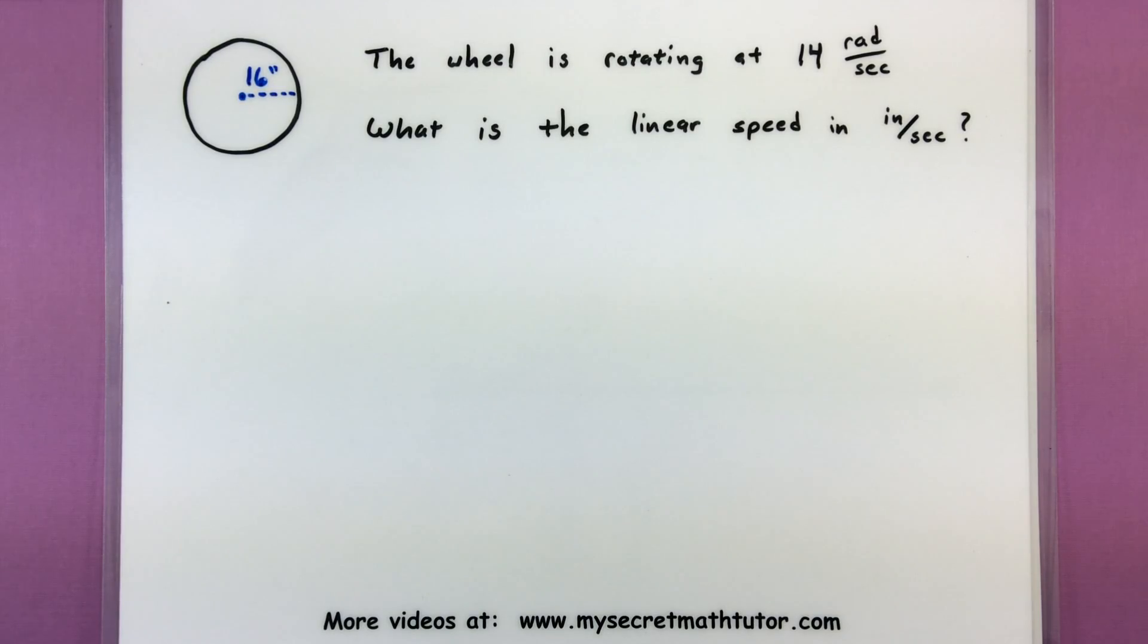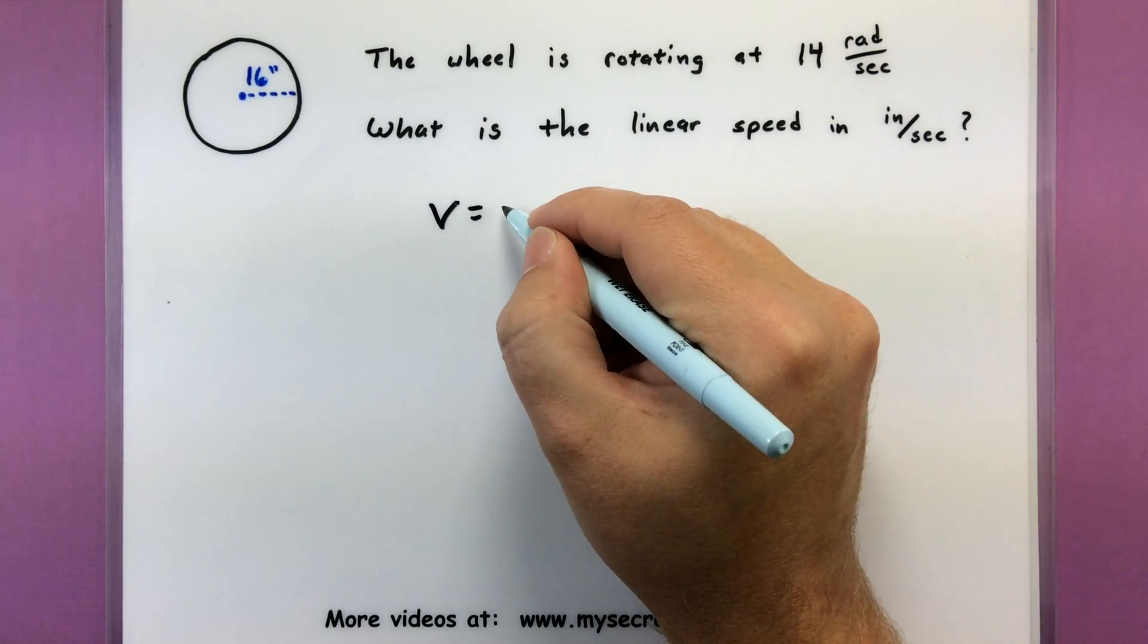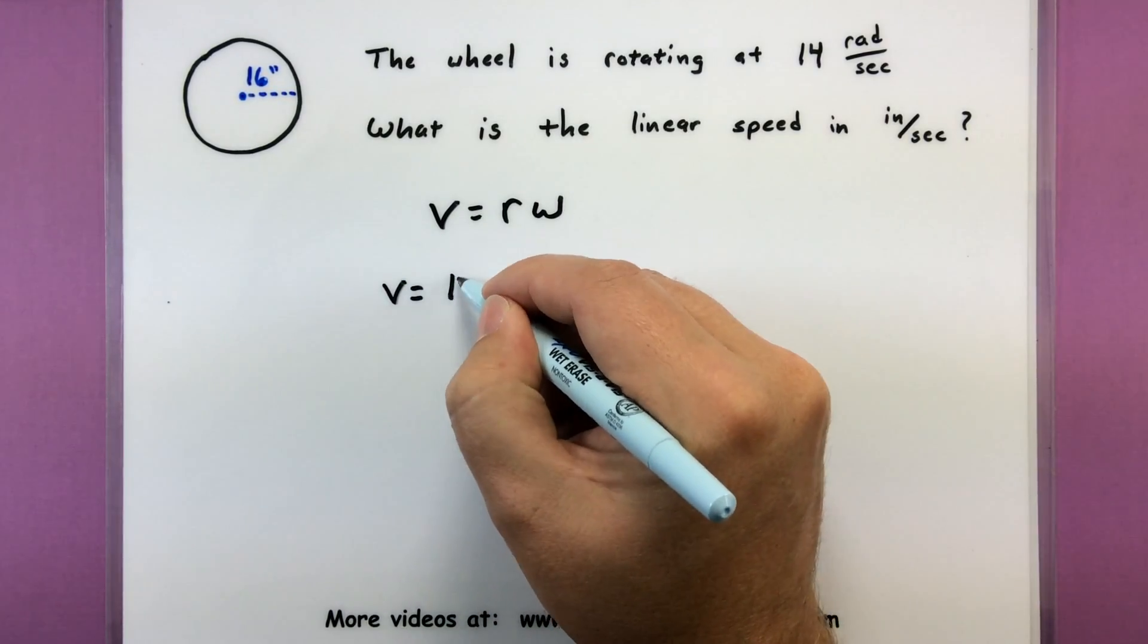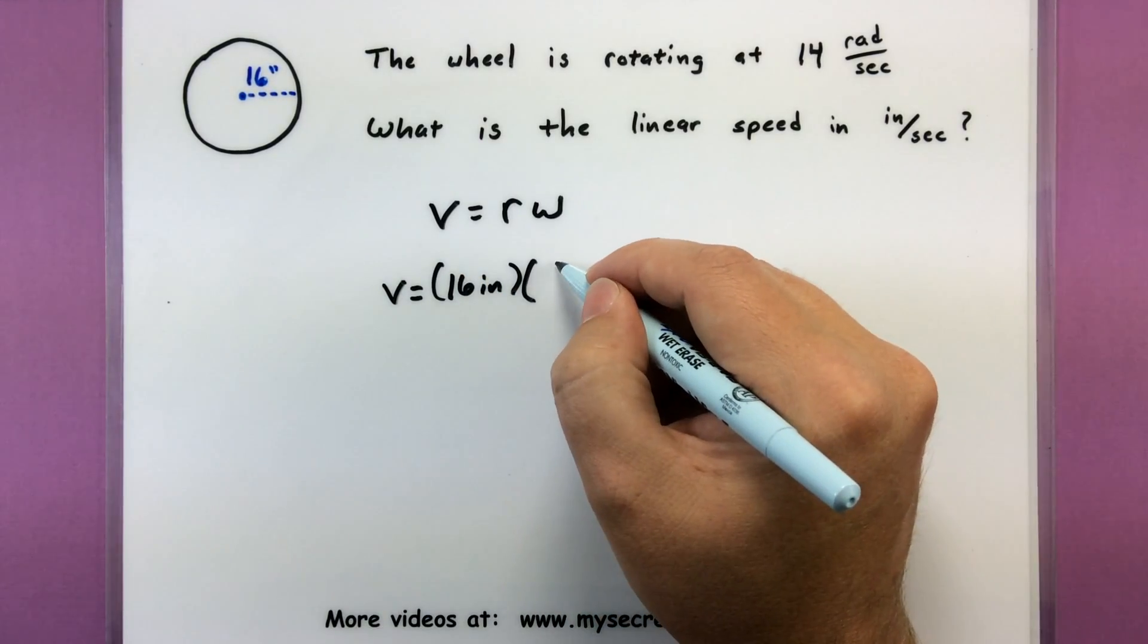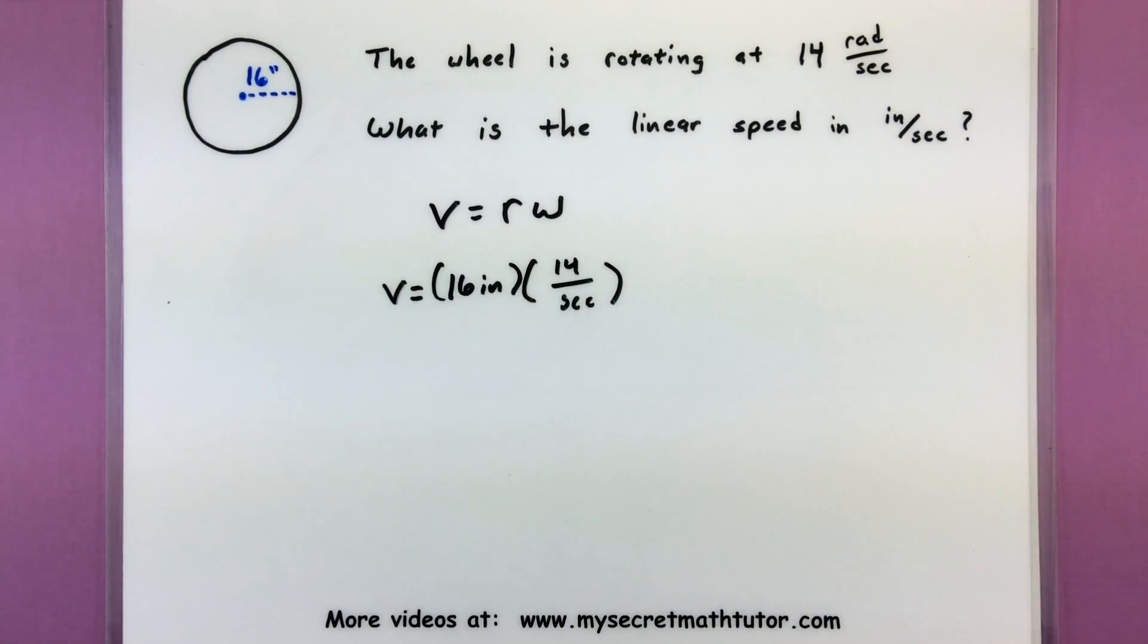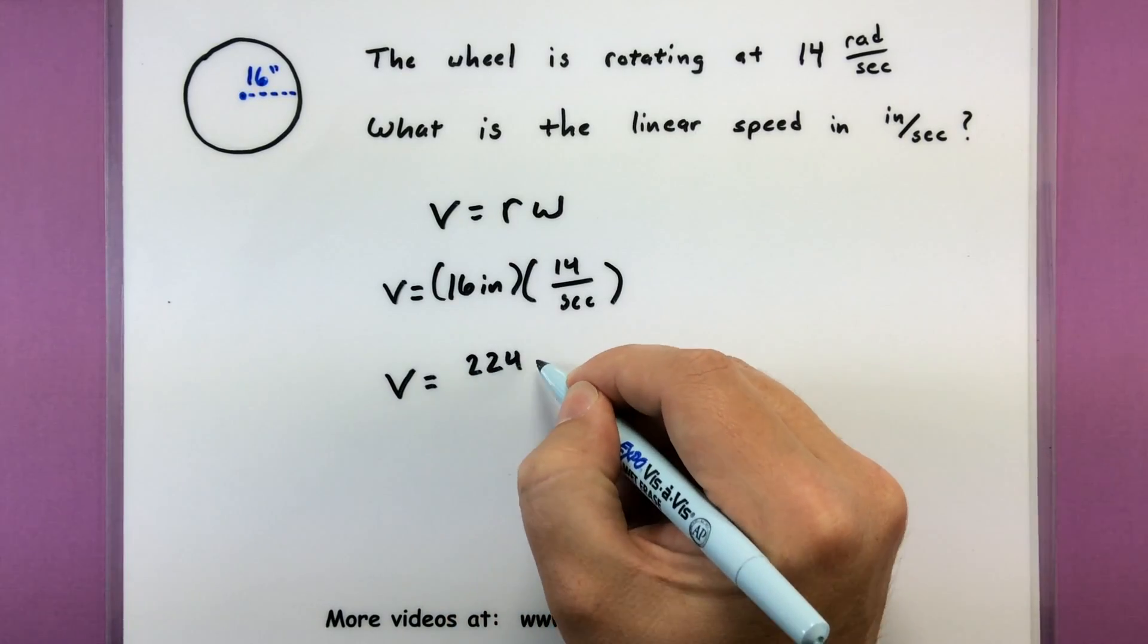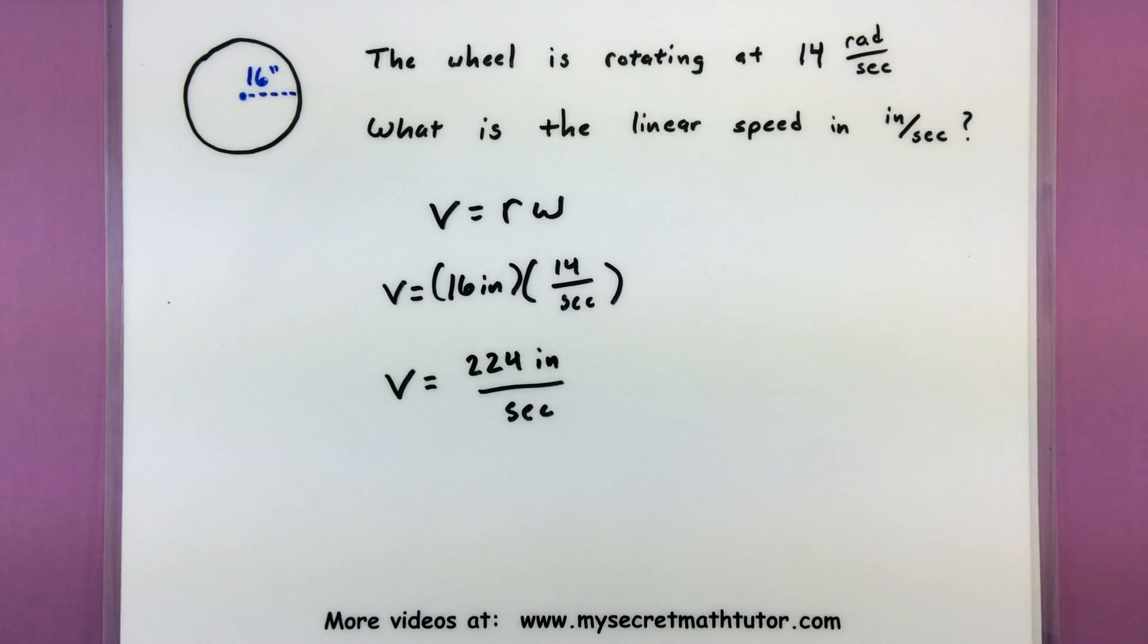So 14 radians, so we borrow our formula linear velocity equals r times omega and we start dropping in our values. So the linear speed is equal to 16 inches multiplied by 14 radians per second. All right so no surprises, no tricks for this one, we simply get that the linear speed would be 224 inches every second. Not too bad.